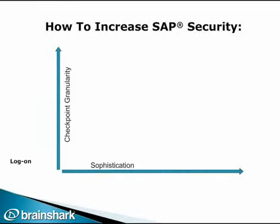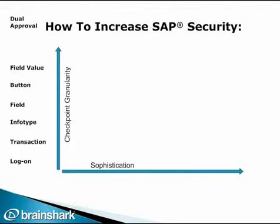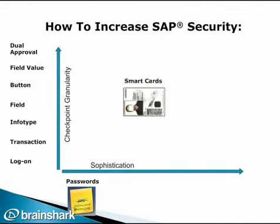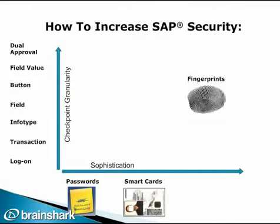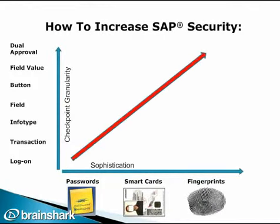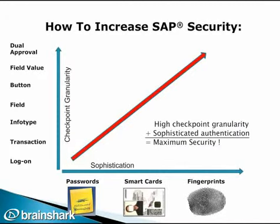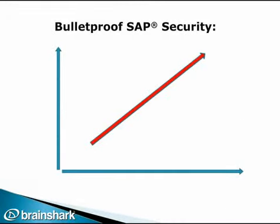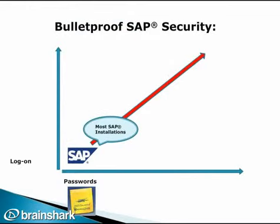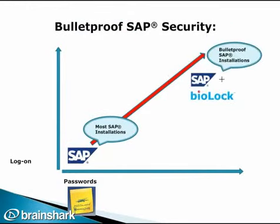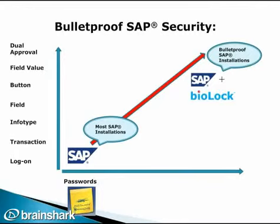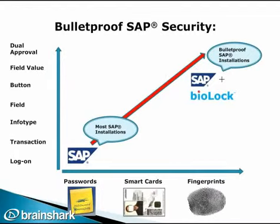This graph shows how granularity can progress beyond a simple logon to transactions, infotypes, fields, buttons, and so on. On the horizontal axis, we see the progression from passwords to smart cards and fingerprint scans. Combining these two variables, depending on the security risk of a given user, gives you the greatest security. Non-critical users can be exempted from these verifications. The standard SAP installation using only passwords is shown in the bottom left corner of the graph. To achieve bulletproof security with BioLock software, just add security checkpoints at granular levels along with more sophisticated ways of authenticating at those checkpoints.